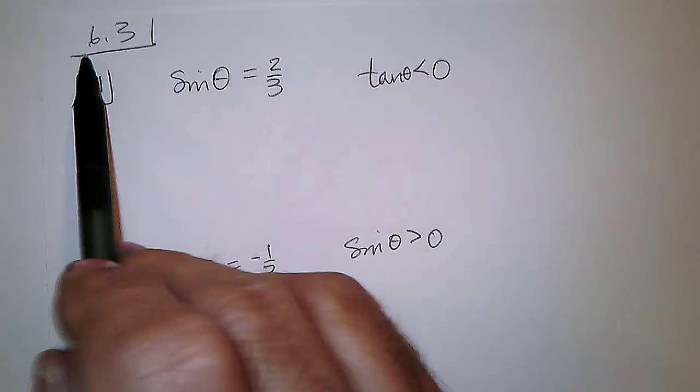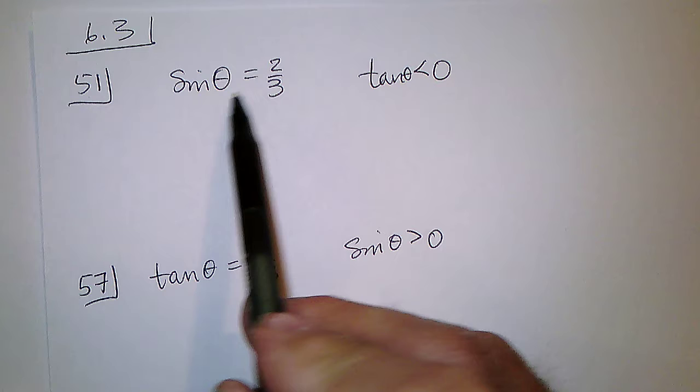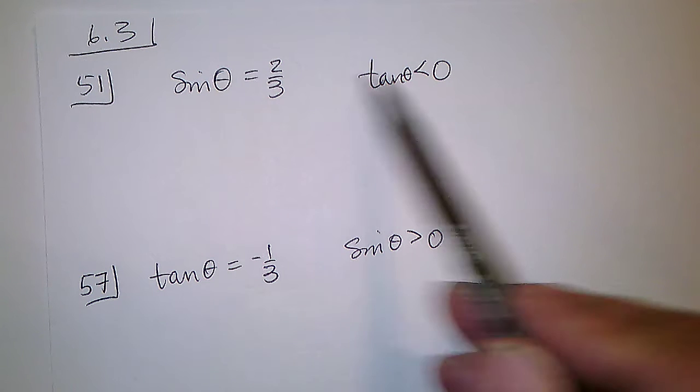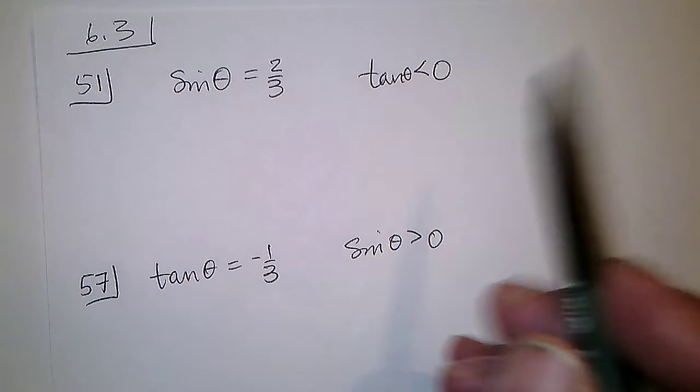Alright, so we're supposed to find problem 6.3, number 51. We need to find the 6 trig functions if the sine of the angle is 2/3 and the tangent is less than zero.